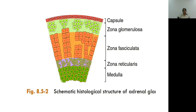The histological structure of the adrenal gland shows one outer layer which is the capsule, then the cortex, and in the middle 10–20% is the medulla. There are three layers of cortex: zona glomerulosa, which is a thin outer layer with cells in small clumps; zona fasciculata, where cells are present in columns; and zona reticularis, where the cells are more diffusely arranged with no regular pattern.